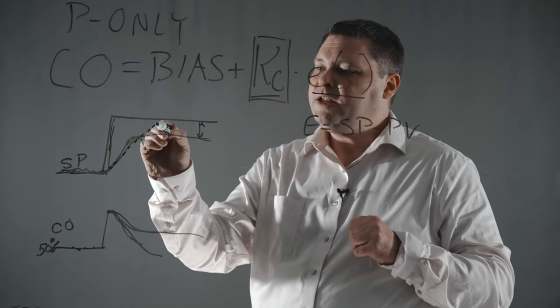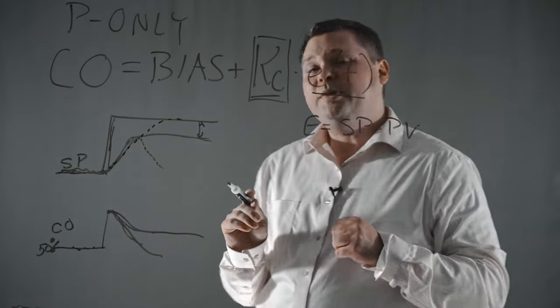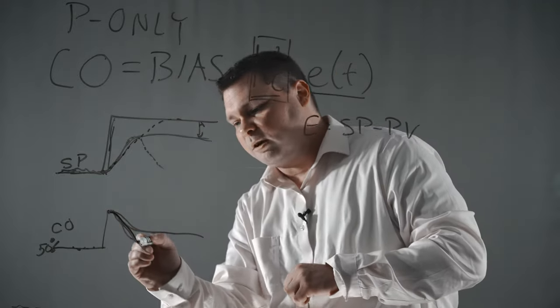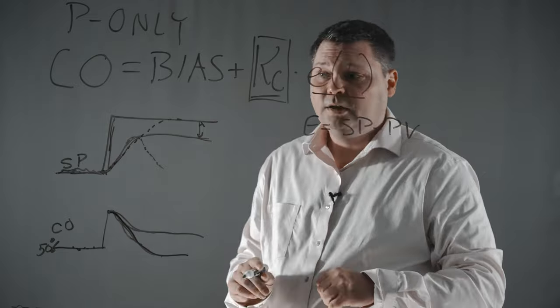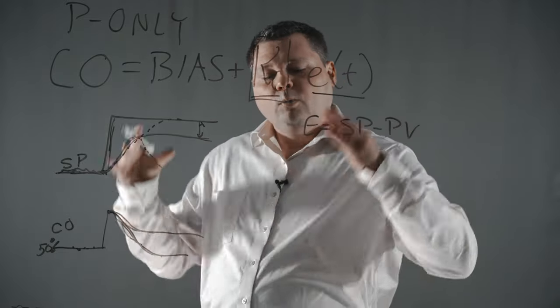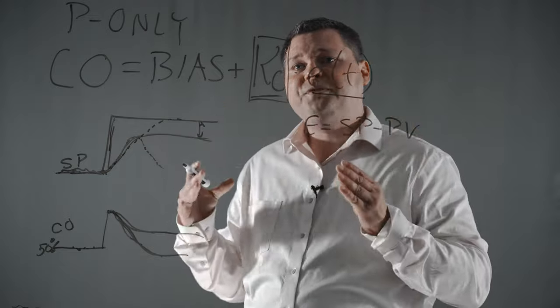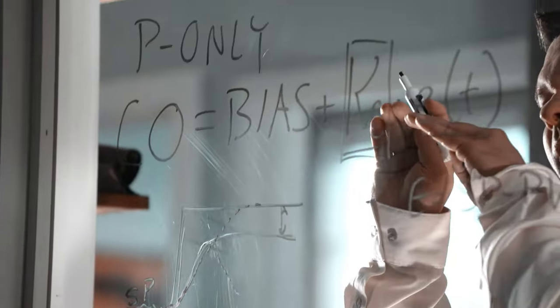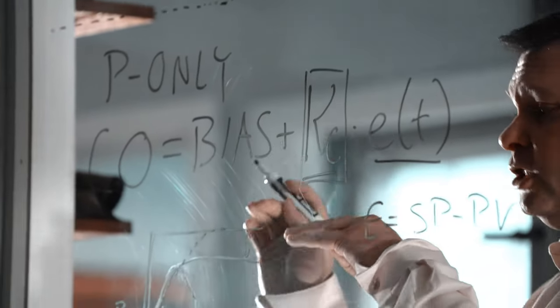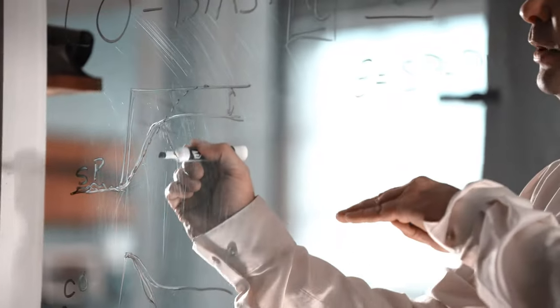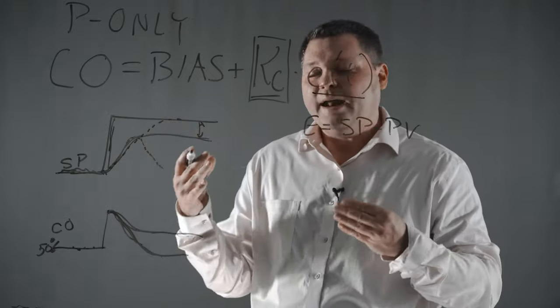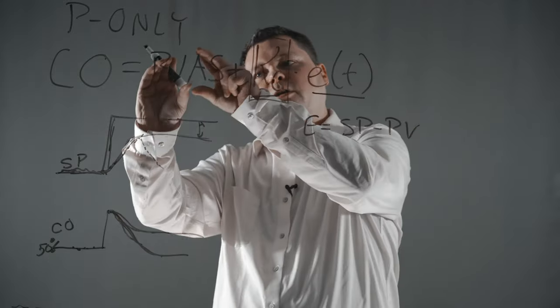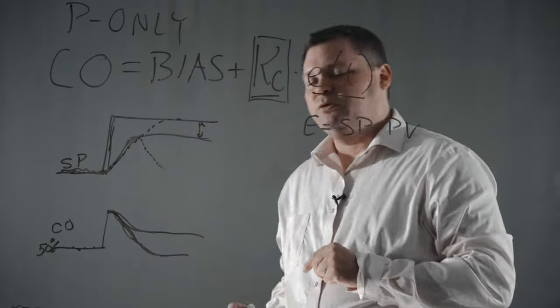Well, if our process variable magically gets up to the setpoint, that means we have no error. We have no error, which means the output is equal to the bias, which again means our controller output comes down here, which means that a P-only controller will generally give you offset, which means that if you move the setpoint off of the value that was the bias position or the baseline position, as you start to move that setpoint, the process variable can't achieve that because as you get closer, the error starts dropping and this term starts to go away and you're only left with the bias and you start back here.